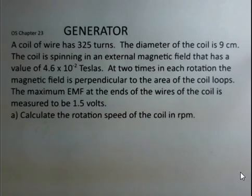And we want 1.5 volts. We want 1.5 volts to be our EMF. So how do we go about calculating the rotation speed of the coil in RPMs?